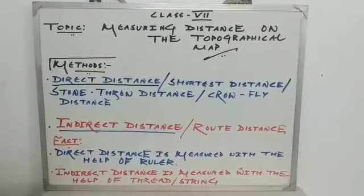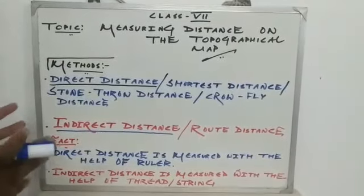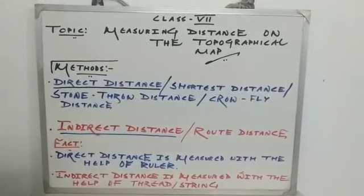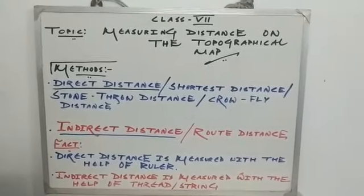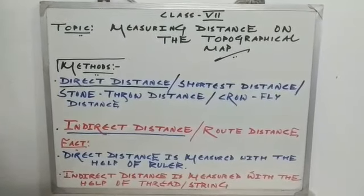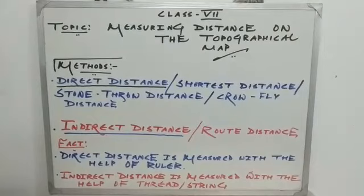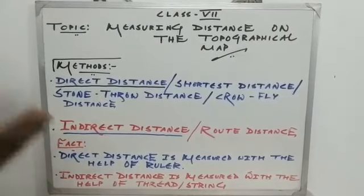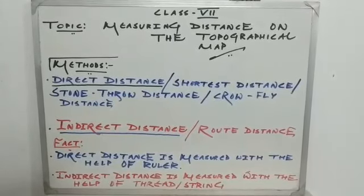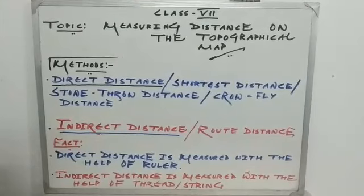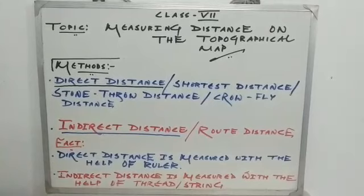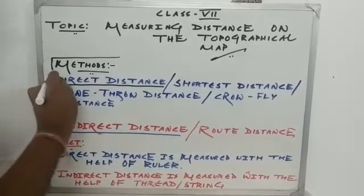Hello, my dear students, welcome to Methodist School Dankuni virtual classroom. We are continuing the first chapter: representation of geographical features. Today the topic I am going to teach is the measurement of distance on the topographical map. In the last episode we already mentioned the scale of the map — the scale of a topo sheet is two centimeters to one kilometer, meaning two centimeters on the map is equivalent to one kilometer on the ground surface.